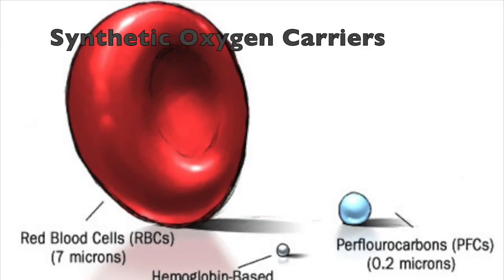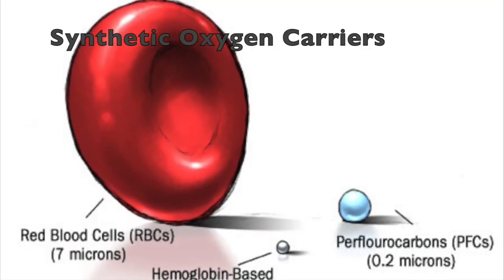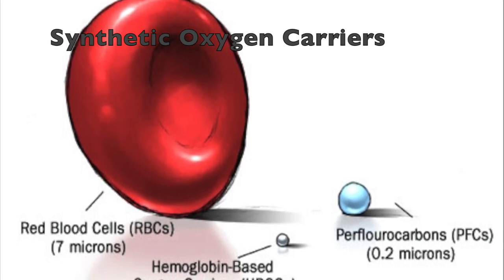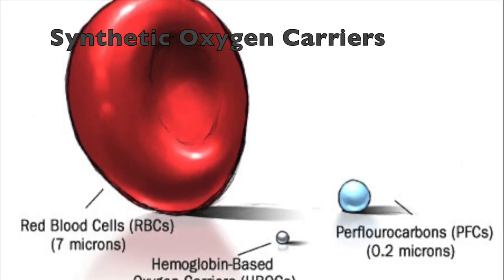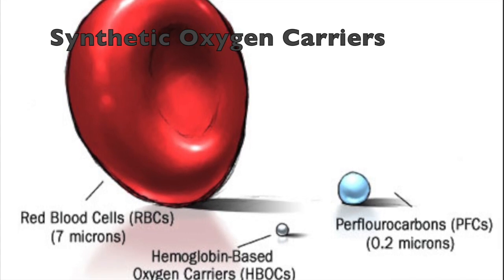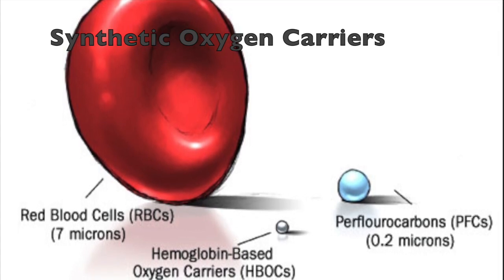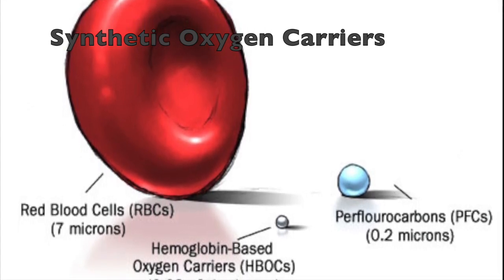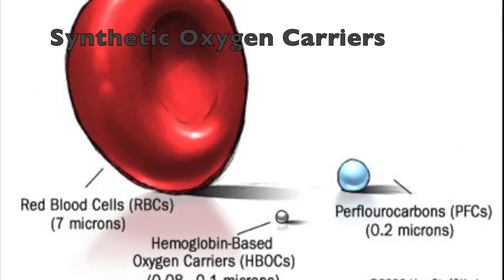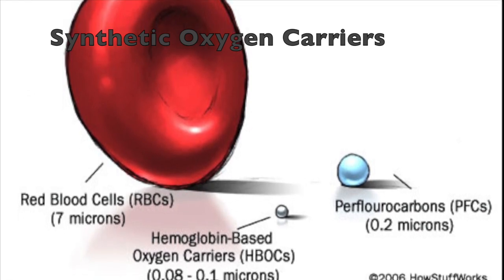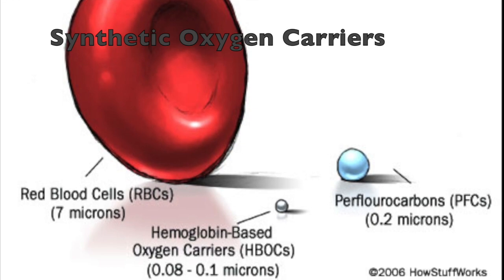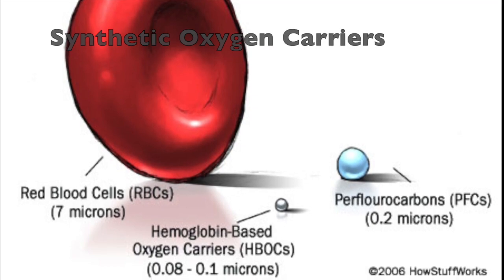Lastly is the injection of synthetic oxygen carriers, or SOCs. SOCs are purified proteins or chemicals that have the ability to carry oxygen, such as hemoglobin-based oxygen carriers, or HBOCs, and perfluorocarbons, or PFCs. Like red blood cells, they work to deliver oxygen to the muscles, increasing aerobic capacity and endurance.